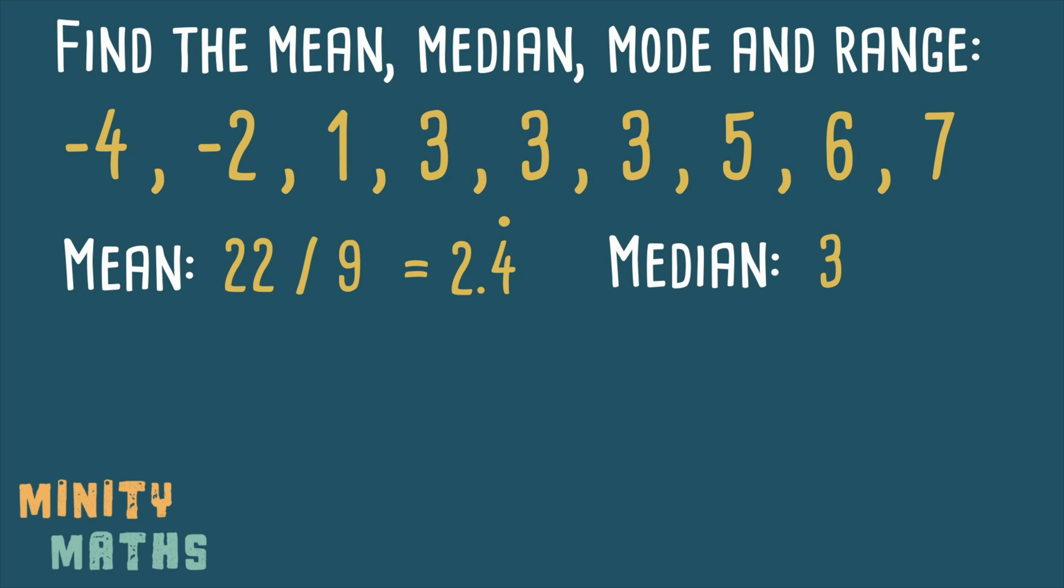Next we want to find the mode, the number which occurs the most. We can clearly see from the list that the number 3 occurs the most, as there are three 3s.